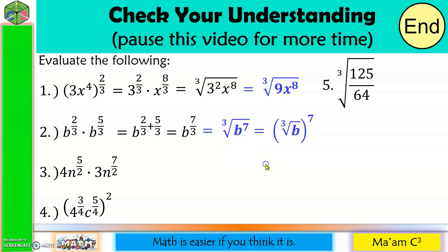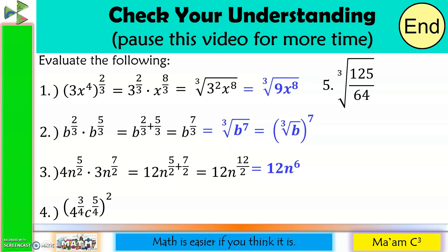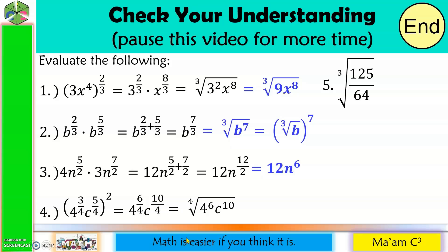Number 3: multiply the constants first — 4 times 3 is 12 — then add the exponents for base N: 5 over 2 plus 7 over 2. Since they are similar fractions, add the numerators: 5 plus 7 is 12, giving 12N raised to 12 over 2. Since 12 divided by 2 is 6, the answer is 12N raised to the 6th power. Number 4: distribute the exponents — 3 times 2 is 6, 5 times 2 is 10 — giving 4 raised to 6 over 4 times C raised to 10 over 4. The denominator 4 becomes the index, so the answer is the 4th root of 4 to the 6th times C to the 10th power. Since 4 to the 6th is 4,096, the answer is the 4th root of 4,096 C to the 10th power.